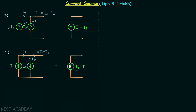The direction of the current will depend on the values of I1 and I2. We will have the same direction when I1 is greater than I2, but the opposite direction when I2 is greater than I1, because in that scenario I will be negative. When the calculated current comes out negative, we simply reverse the direction of the current. That is all for case number two.